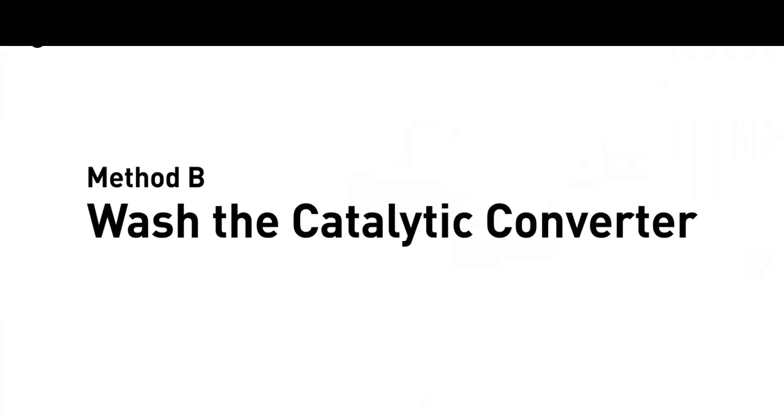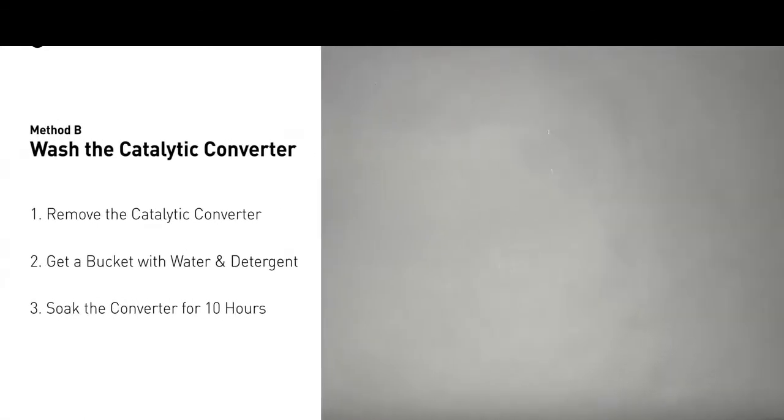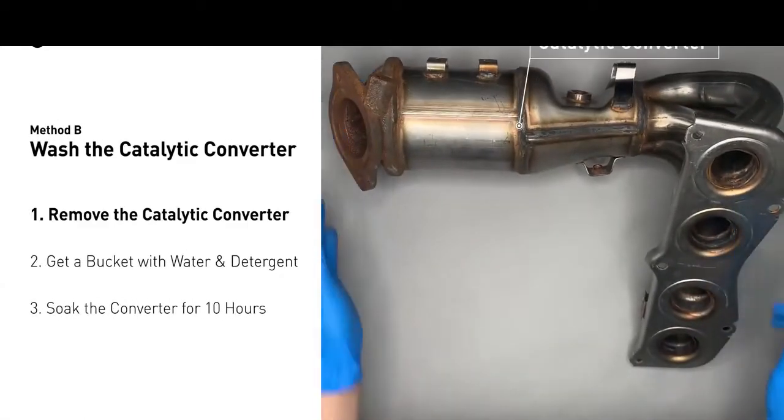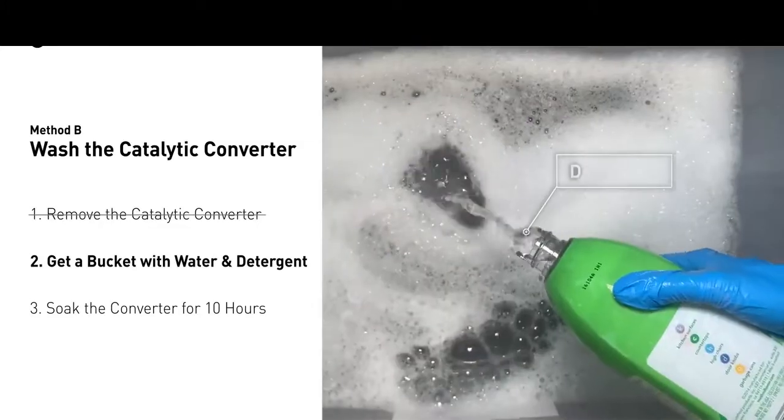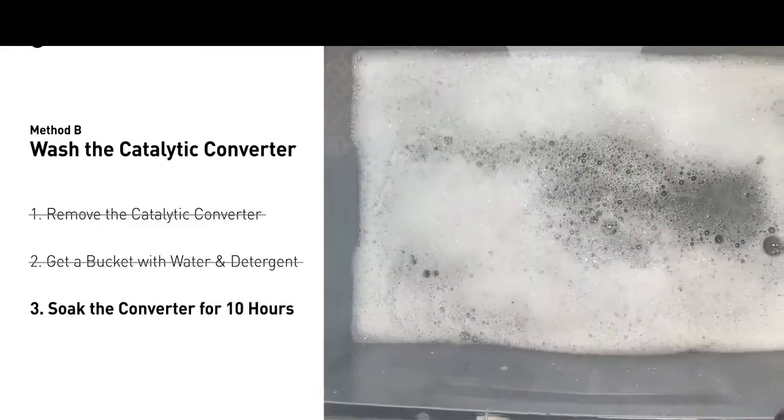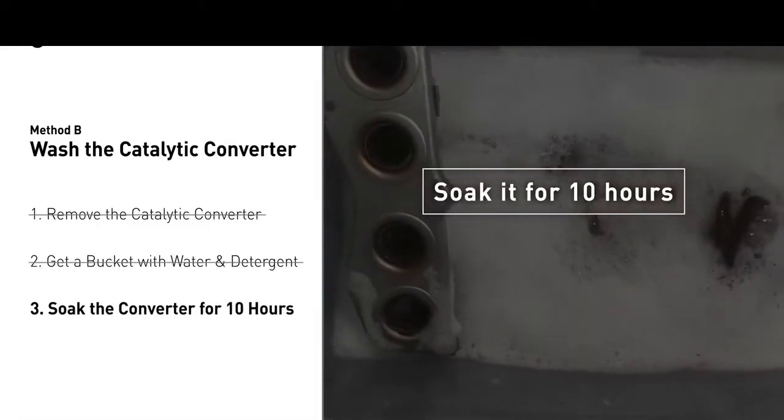Method B: wash the catalytic converter. First, remove the catalytic converter from your vehicle. Then get a bucket, put some detergent soap in it, and foam it up. Put the catalytic converter into the solution and soak it for 10 hours to remove all the crud inside.